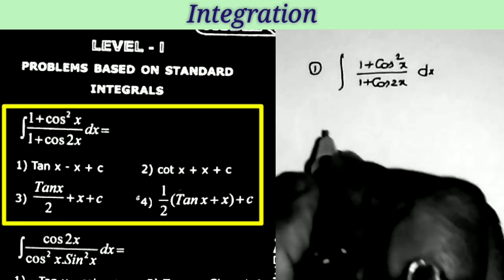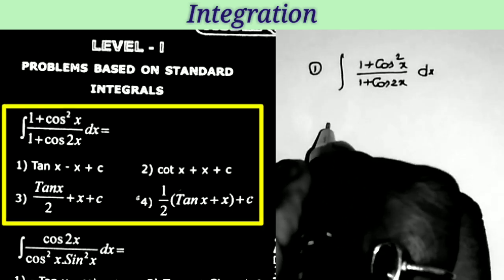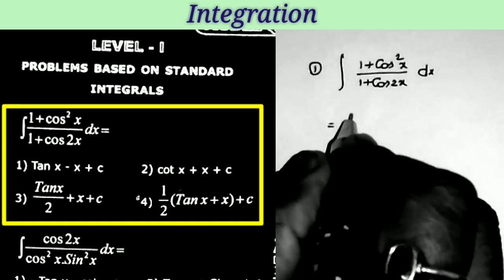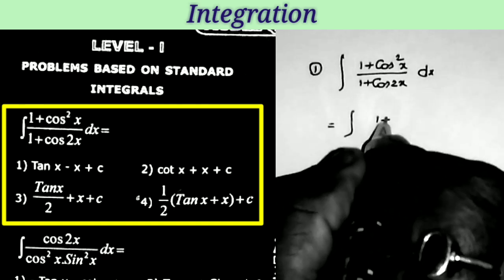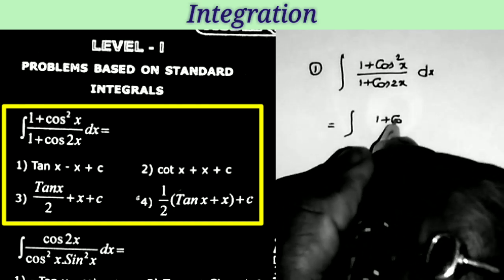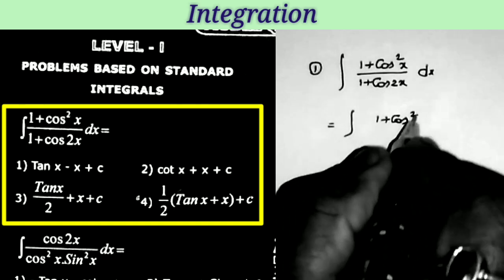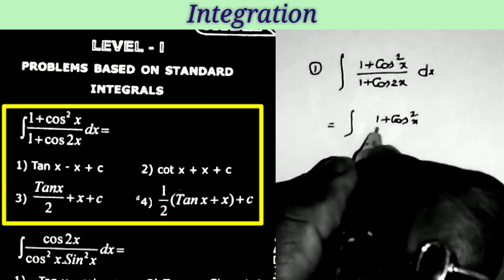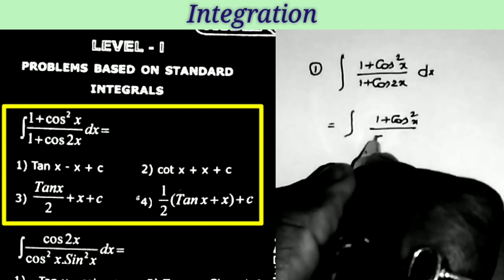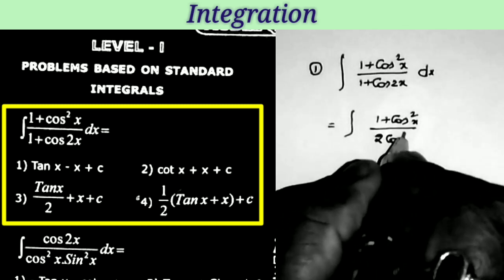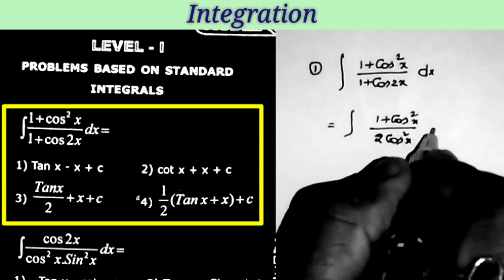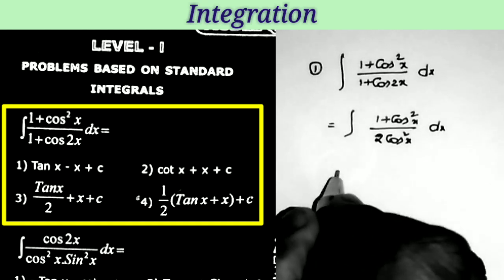This equals integral of (1 + cos²x) divided by — what is the formula for 1 + cos2x? This is equal to 2cos²x.